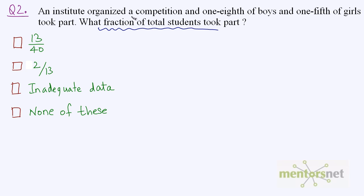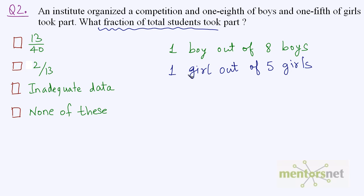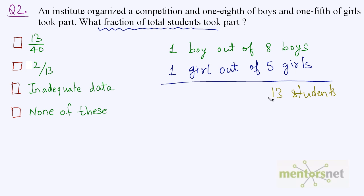The data is adequate because we have been given the fraction of boys and the fraction of girls that took part. The fraction of boys is one-eighth and the fraction of girls is one-fifth. Literally, one boy out of eight boys took part and one girl out of five girls took part. So if we consider 8 boys and 5 girls, that is 13 students total, and only two students took part — one boy and one girl. So 2 students out of 13 took part, and our answer is option B.